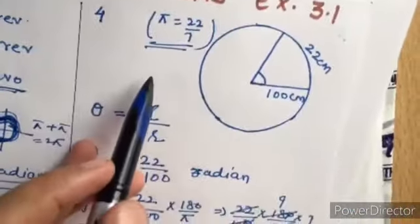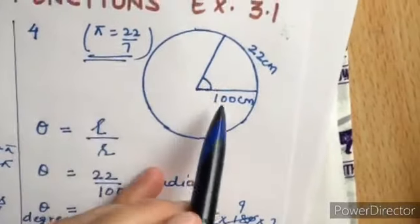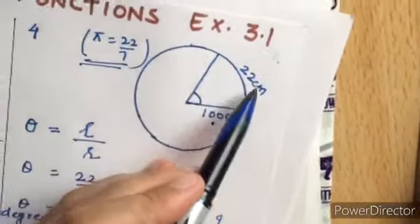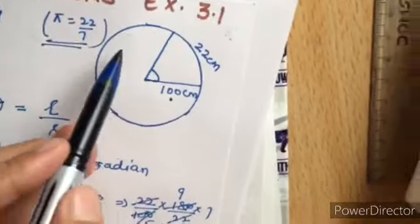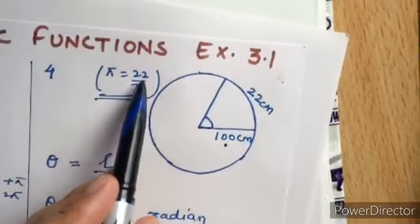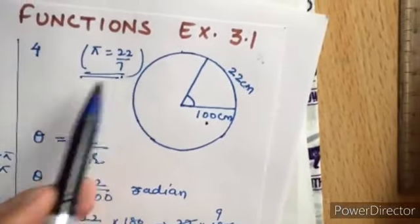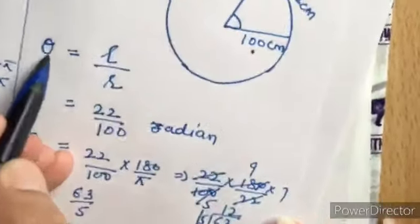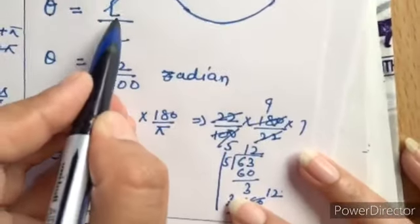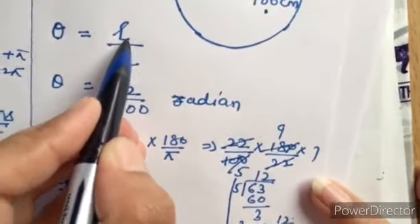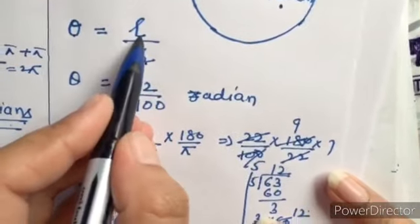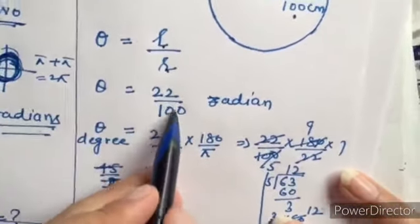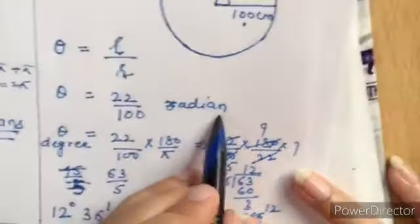Question number four: find the degree measure. The radius given is 100 cm, the length of arc is 22, and we have to use π = 22/7. The formula for angle theta is: theta equals length of arc divided by radius, that is θ = l/r.